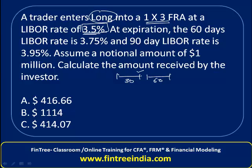After 30 days, the 60-day rate is 3.75% and the 90-day rate, which is irrelevant, is 3.95%. This means we have a right to borrow at 3.5%, whereas the rate in the market is 3.75%. We have to calculate the payoff to the long.